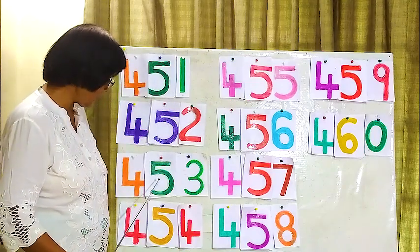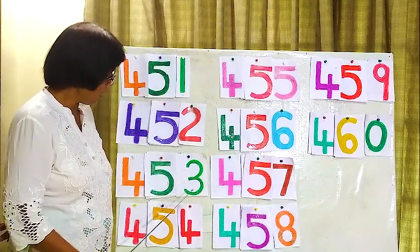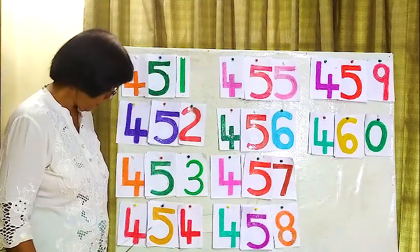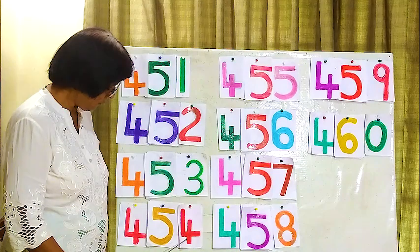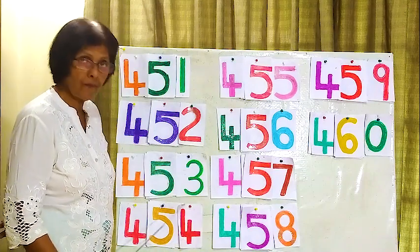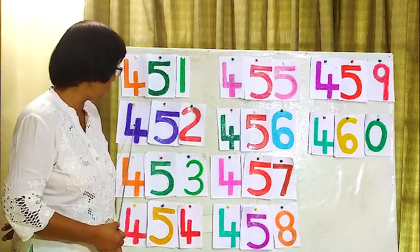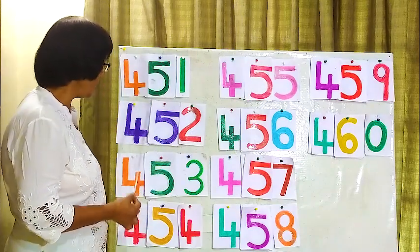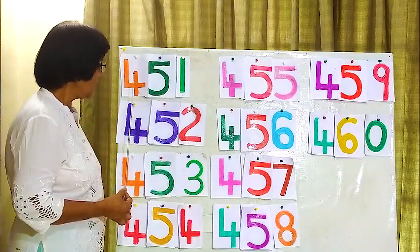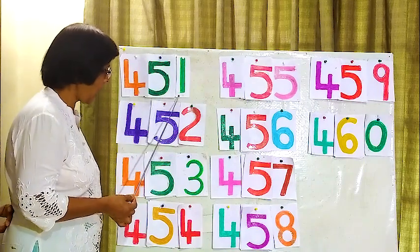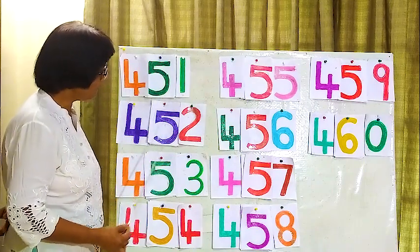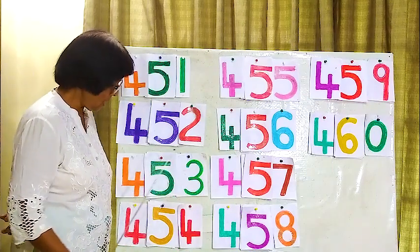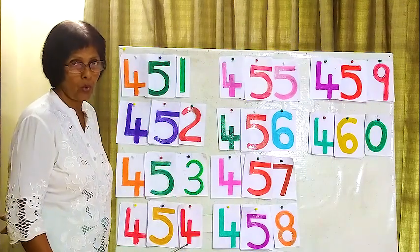Here 451, here 453. Okay, carefully see the numbers and then read. Here 454, 454. Here 452, 452. Now again we will read in order: 451, 452, 453, 454.